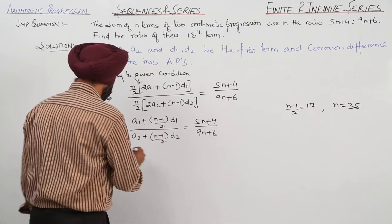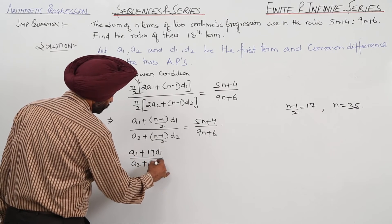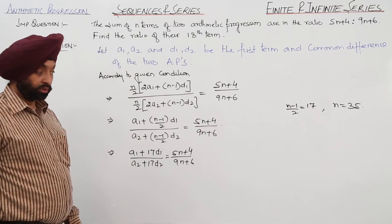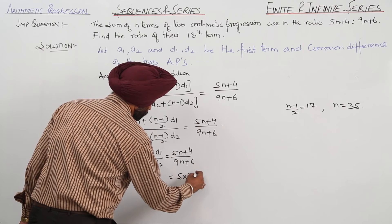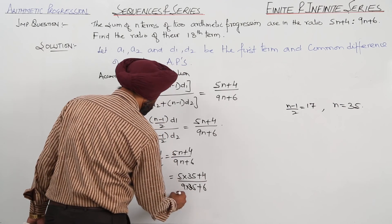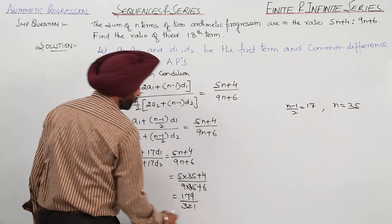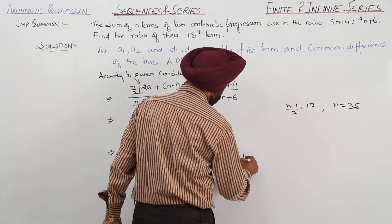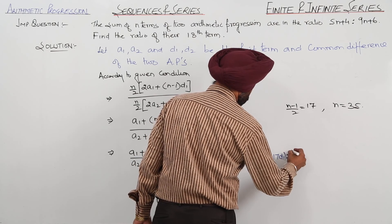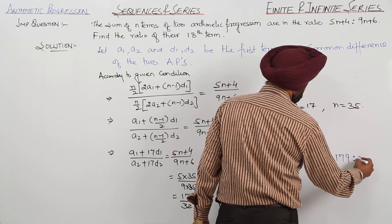Solving, we get n equals 35. So a1 plus 17d1 upon a2 plus 17d2 equals 5 times 35 plus 4 upon 9 times 35 plus 6, which gives 179 upon 321. Hence, a1 plus 17d1 ratio a2 plus 17d2 equals 179 ratio 321.